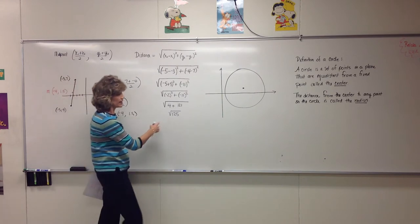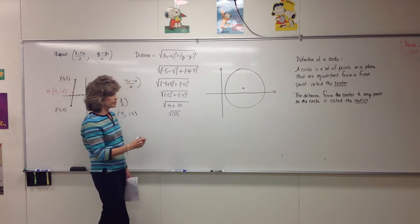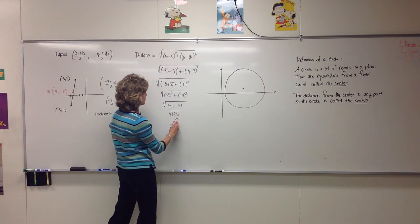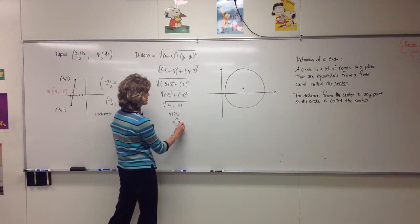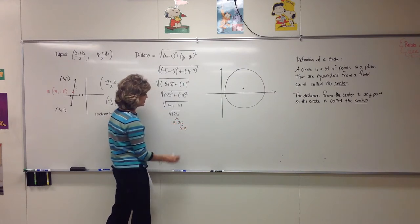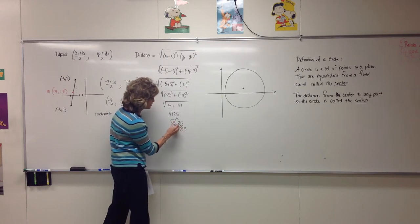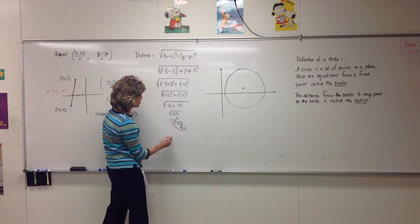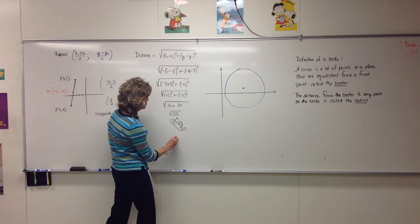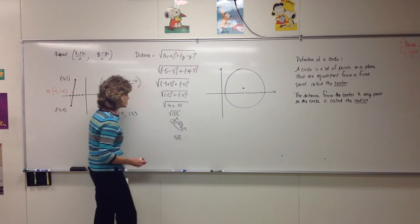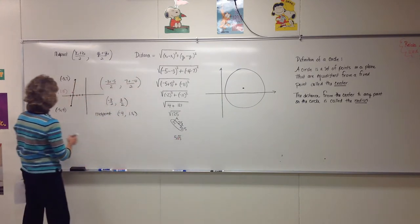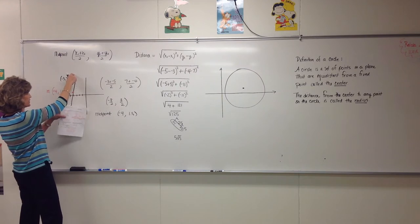If we have a radical like this that has the possibility of being reduced, reduce it. That makes it five times twenty-five, and five times five. So there's a pair that's a perfect square — we can take one out and leave one underneath. So five times the square root of five is the exact length, the distance between these two points.